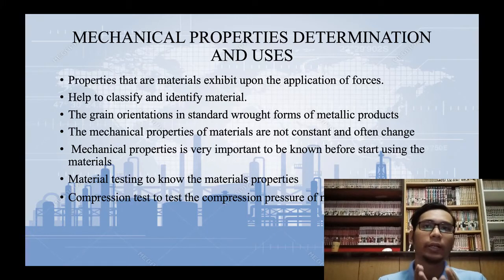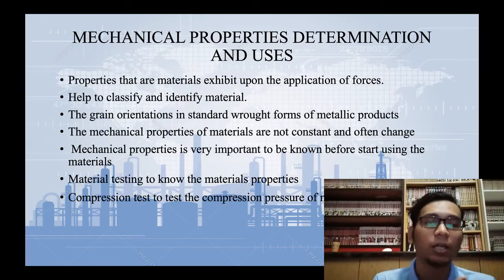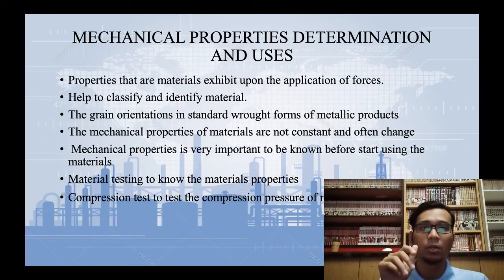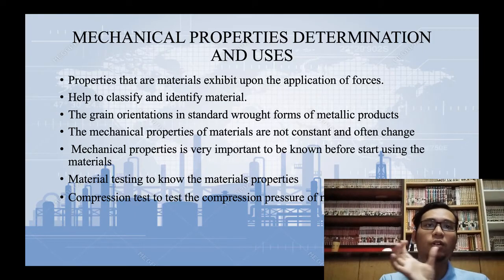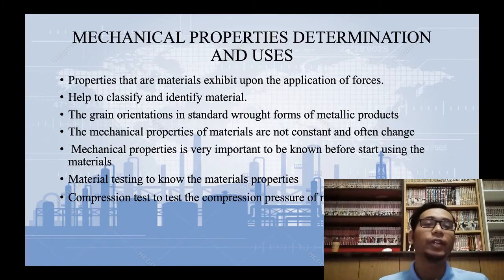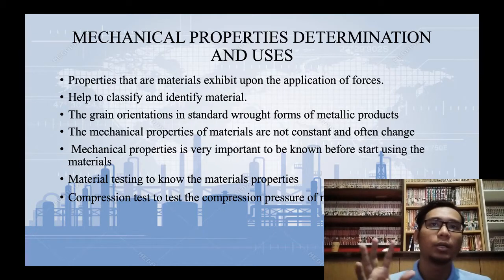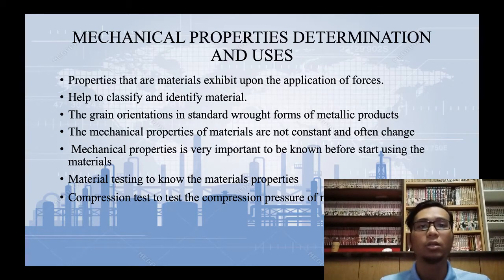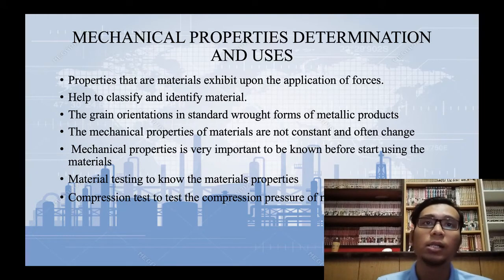To determine mechanical properties, we use material testing. There are many material testing methods, each for detecting or calculating individual properties. The usage of mechanical properties determination is for assessing the stability and suitability of material for various applications. For example, to know how long a material can be operated, you need to use material strength testing.